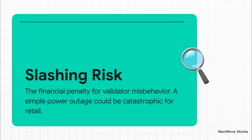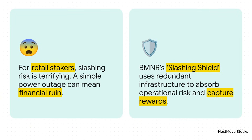That penalty is called slashing. If your validator reports the wrong price as an Oracle, you get slashed. If it goes offline and fails to sign a bridge transaction, you get slashed. If it loses the data it was supposed to be storing — you guessed it — you get slashed. For a regular person running a validator at home, a simple power outage could be financially catastrophic — it could cost them their entire stake. It's genuinely terrifying. But this is where the opportunity is for a major operator. What's a complete nightmare for a small-time staker is just a manageable operational problem for an industrial machine. A company like BMNR can build what you might call a slashing shield. They've got backup power, redundant internet, 24/7 monitoring. They don't just manage risk — their entire business model is built to absorb it. And because they can absorb that risk, they get to capture that massive reward.